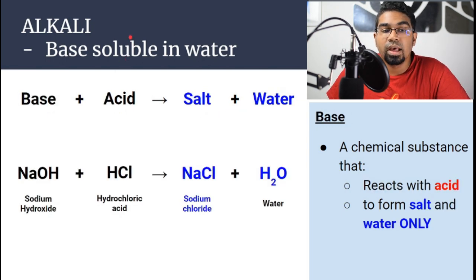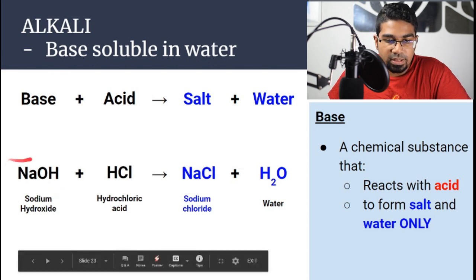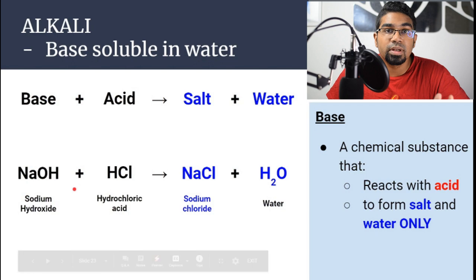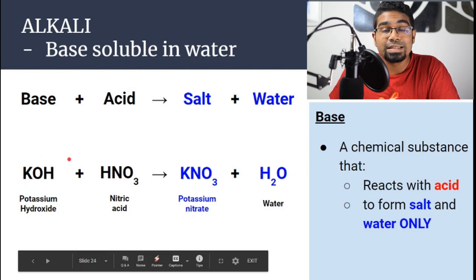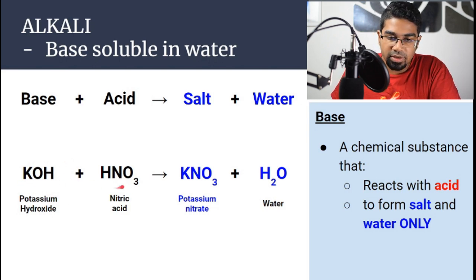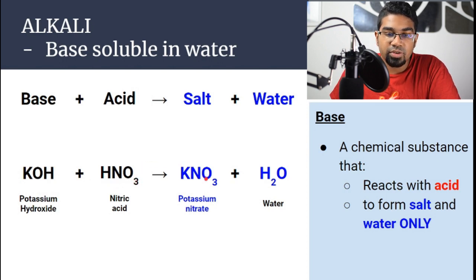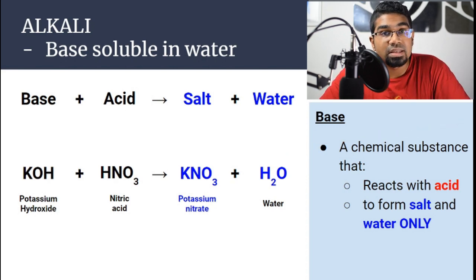Let's look at the reaction of alkalis as bases. We have sodium hydroxide, which is an alkali. With hydrochloric acid, we get sodium chloride, which is a salt, and water — salt and water only. Potassium hydroxide, a metal hydroxide, is also an alkali and therefore definitely a base. Potassium hydroxide reacting with nitric acid gives potassium nitrate, a salt, and water. So all alkalis are bases, but not all bases are alkalis.